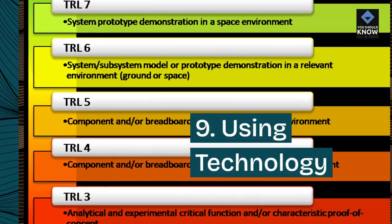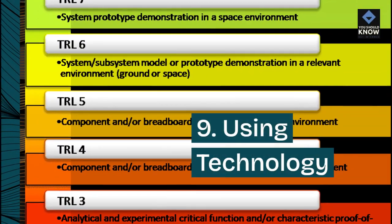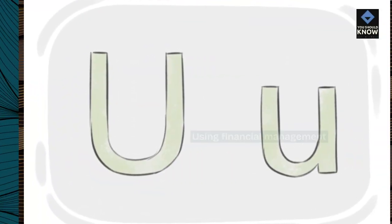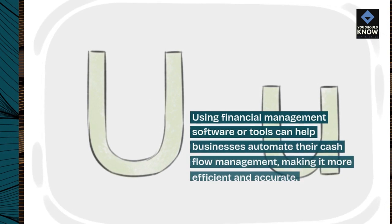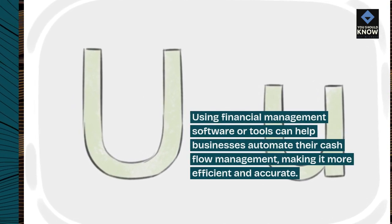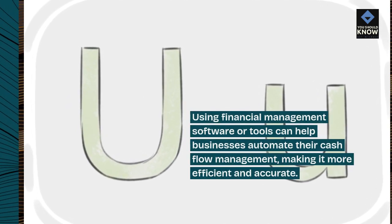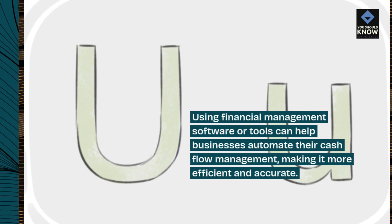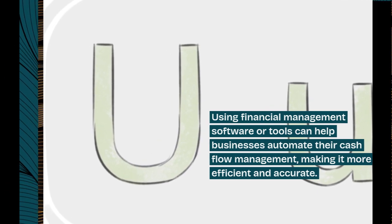9. Using technology. Using financial management software or tools can help businesses automate their cash flow management, making it more efficient and accurate.